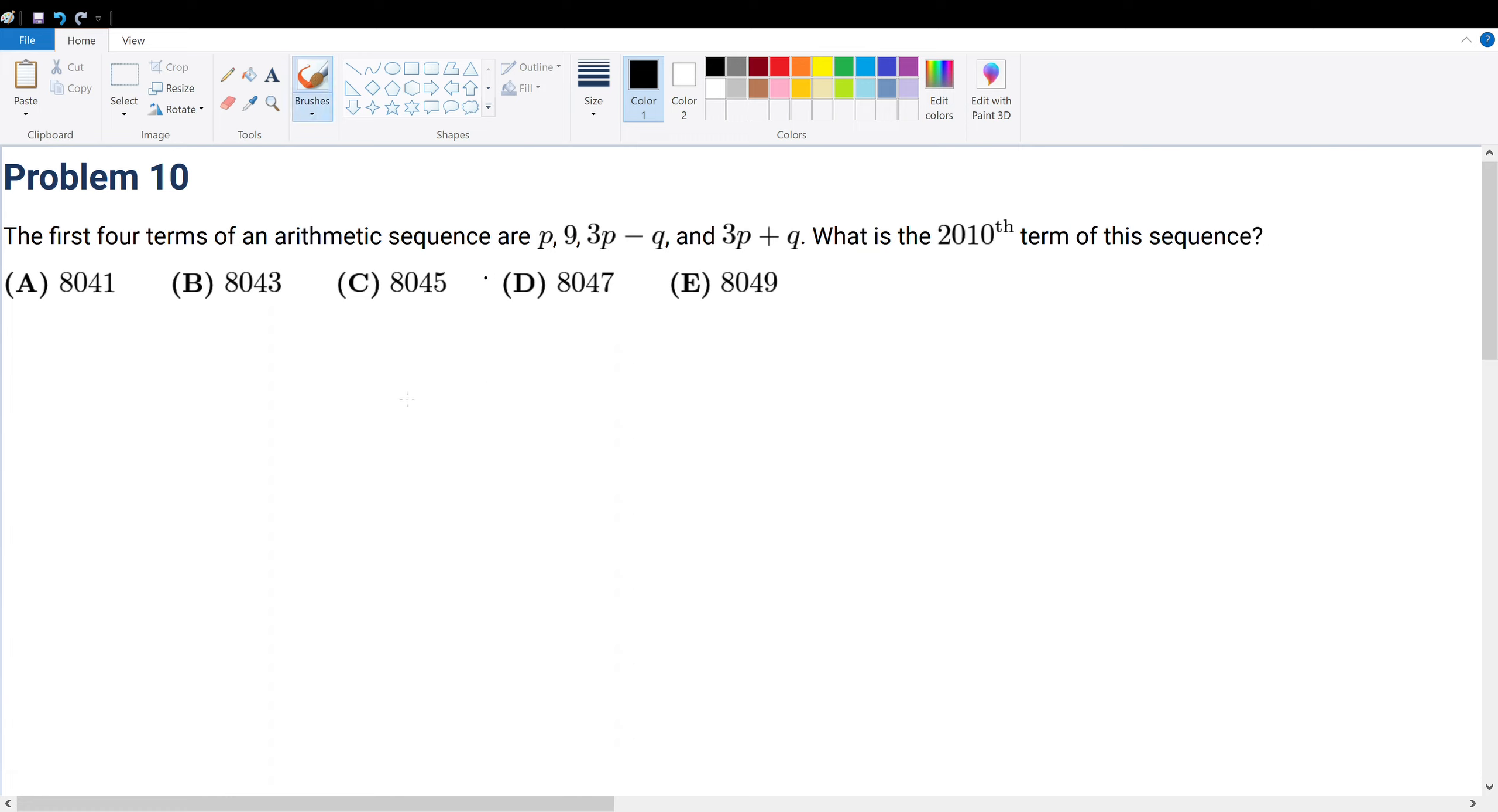If we're trying to find the nth term of a sequence, we need to utilize the nth term formula for an arithmetic sequence, which is the first term plus n minus 1 times d standing for the common difference.